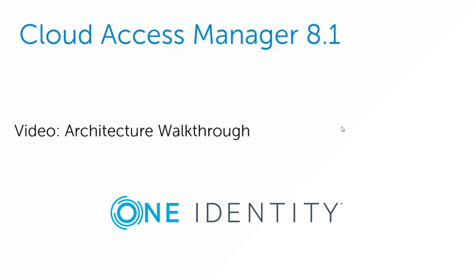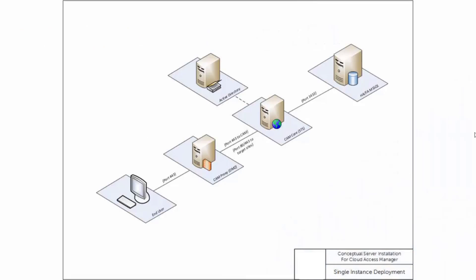The first thing we want to do is take a look at a simple drawing. The diagram you're seeing here is a typical deployment — your mileage may vary, but typically this is how we deploy Cloud Access Manager. The user on the left is out on the Internet and connects to a proxy installed in the DMZ. That proxy is a very lightweight service making calls to the Cloud Access Manager core server — the secure token server — behind your firewall. That core server makes authentication calls to Active Directory, LDAP, etc. And there's a SQL data store for Cloud Access Manager. Later in this video, we'll talk about high availability and failover.